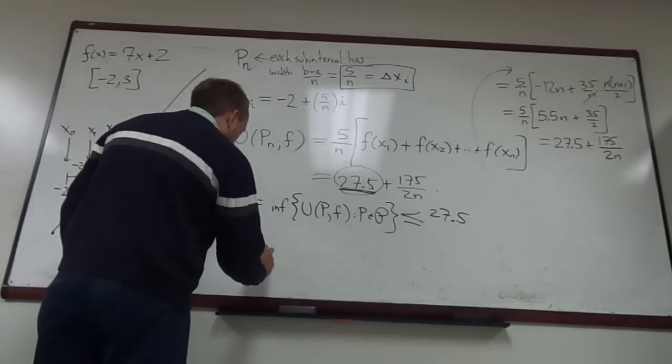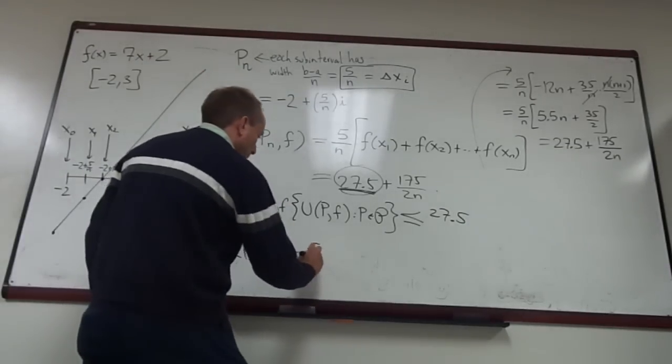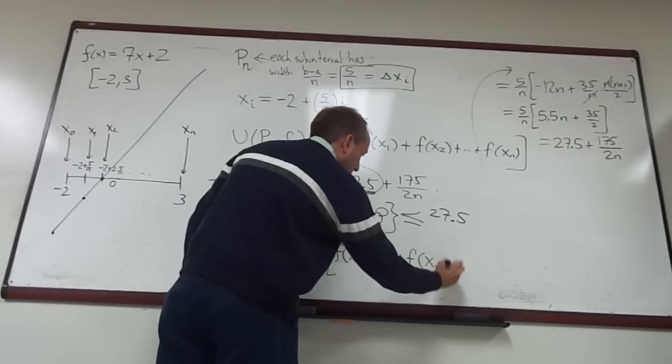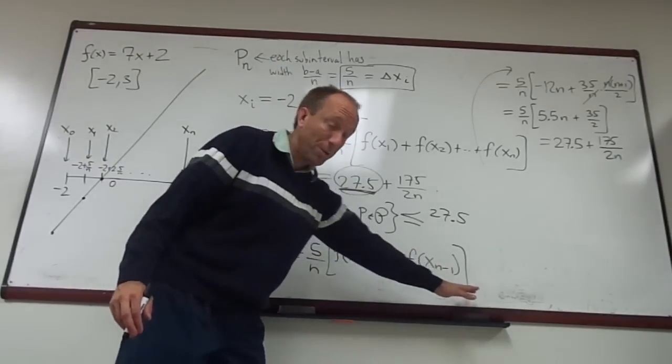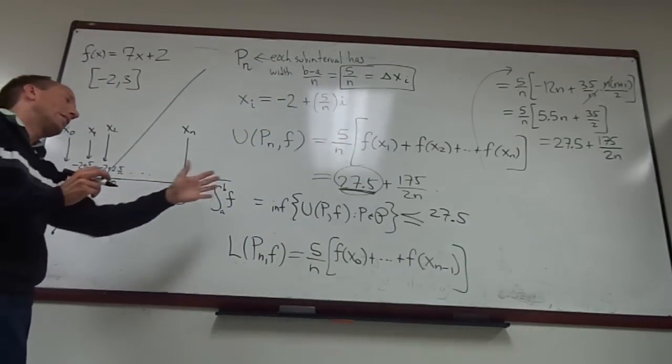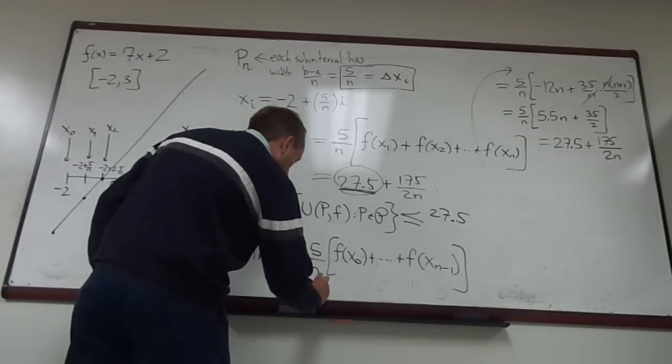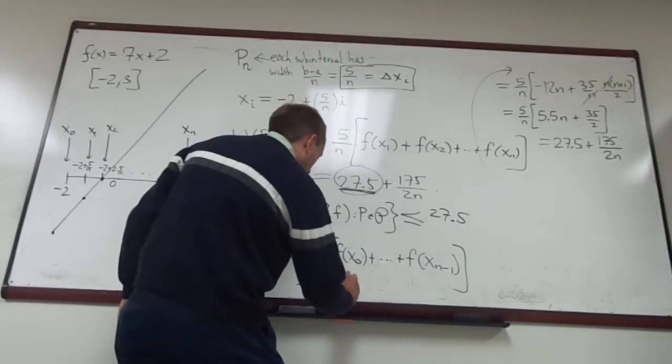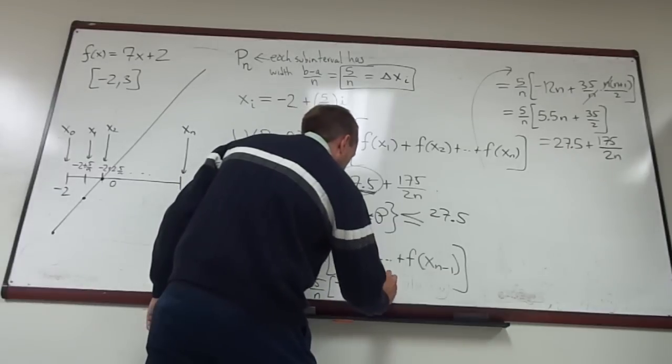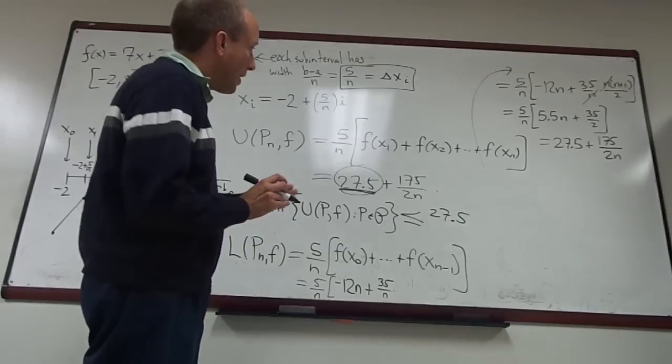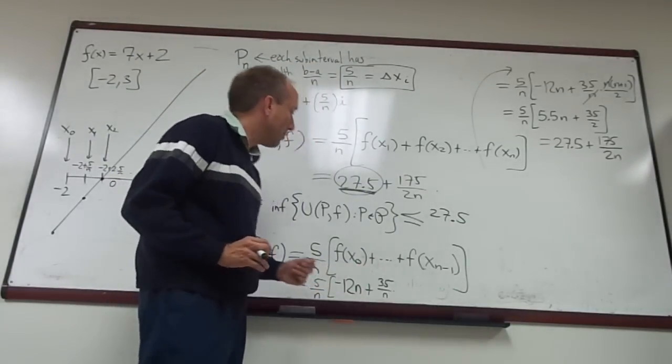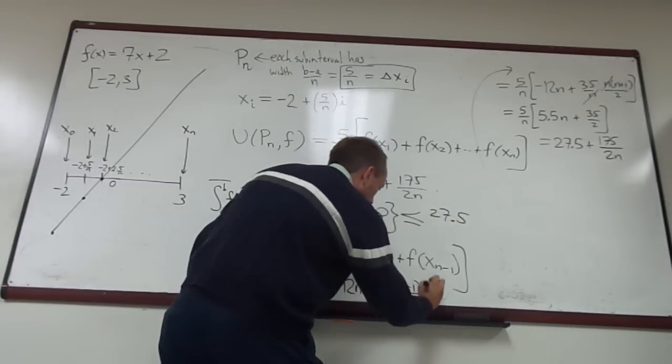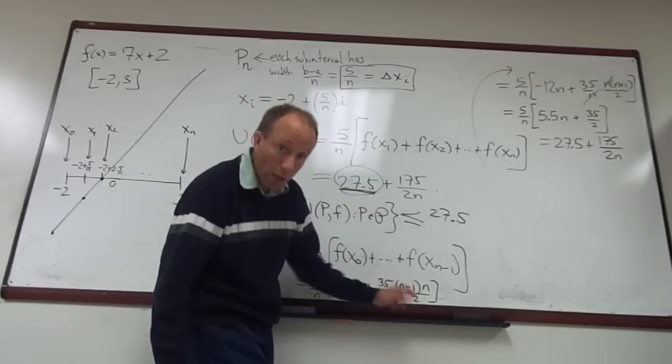Now if you do the L P n of F calculation, it's actually very similar. You have rectangles of width 5 over N and now you're going to start at F of X naught and stop at F of X n minus 1 because now you're looking at the infimum value on each subinterval here, which will be at the left-hand endpoint of each interval. So I'm going to be brief about this. What ends up happening basically is you get the same sort of expression. So it's going to end up being negative 12N plus 35 over N. The only difference now is that instead of adding the numbers 1 through N, here we're going to be adding the numbers 0 through N minus 1. So the expression will become N minus 1 times N over 2.